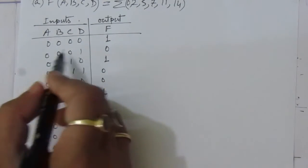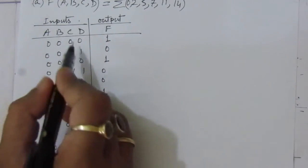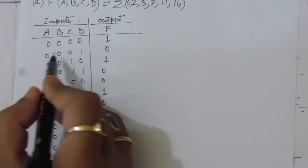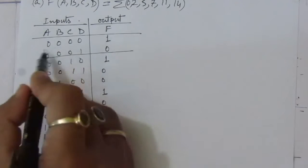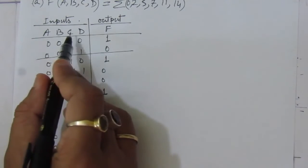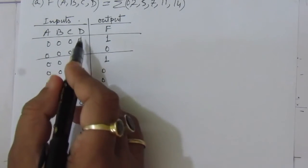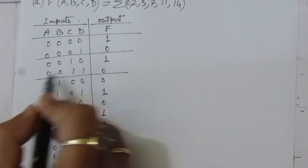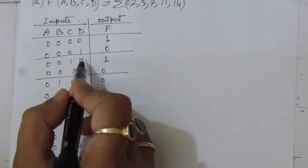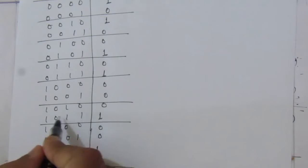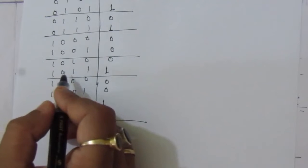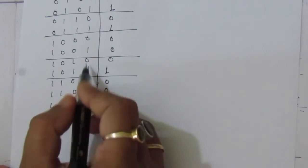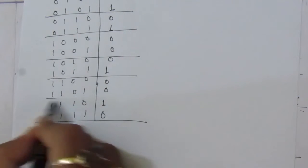If we take the outputs two at a time, we see that for each pair, the three most significant bits A, B, C are the same and only D is changing. For example, minterms 0 and 1 share the same A, B, C with only D varying. Similarly for the pairs 2-3, 4-5, 6-7, and so on through all groups.